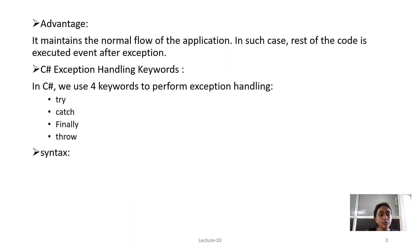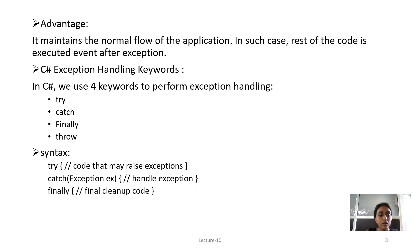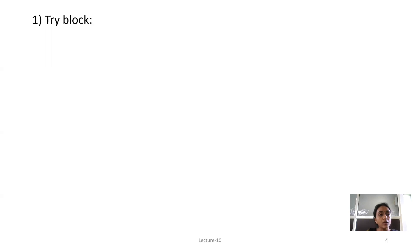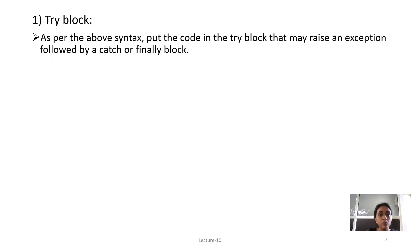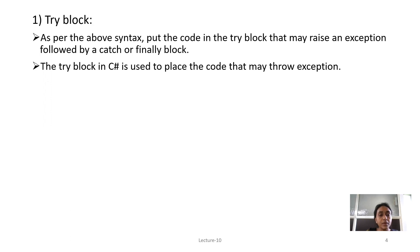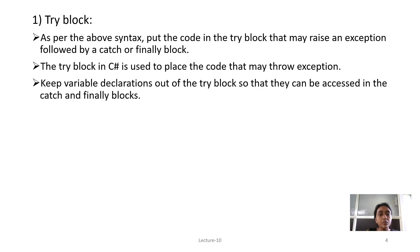The syntax is as below. Try will have some code — the code which may raise errors will be written in a Try block, then after Catch, which will handle the Exception, and the Finally Block will do some final cleanup code. As per the above syntax, put the code in the Try Block that may raise an Exception, followed by Catch or Finally Block. Keep variable declarations out of the Try Block so that they can be accessed in the Catch and Finally Block.